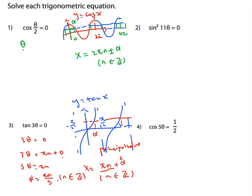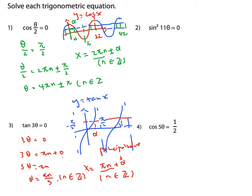So for θ/2 equals cosine⁻¹(something), when the whole function equals 0 it gives you π/2. The whole period is 2π, half of that is π, and half of that is π/2. Using the general solution: θ/2 equals 2πn plus or minus π/2. Solving: θ equals 4πn plus or minus π, where n is an integer — written in the form where n is represented by ℤ, the German symbol for integer.